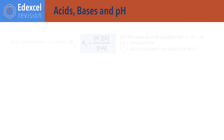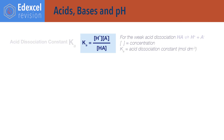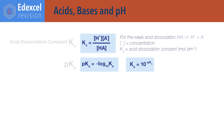For acids, bases and pH. Ka equals concentration of H plus times concentration of A minus, divided by concentration of HA. Ka is the acid dissociation constant; A minus refers to conjugate base ions of the weak acid HA, and concentrations are given in moles per decimetre cubed. pKa equals minus log to the base 10 of Ka, and Ka equals 10 to the minus pKa.